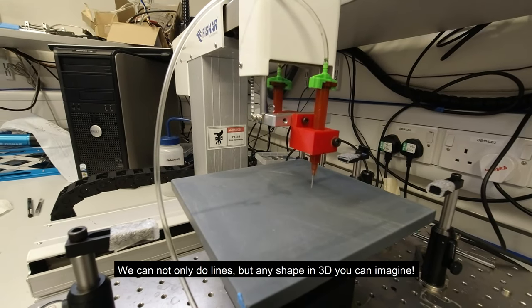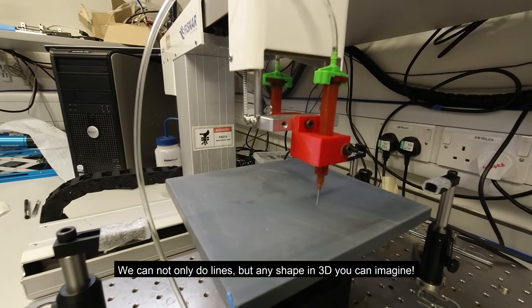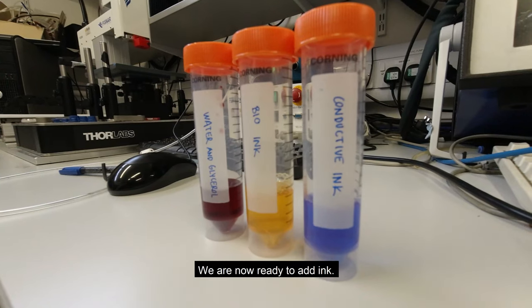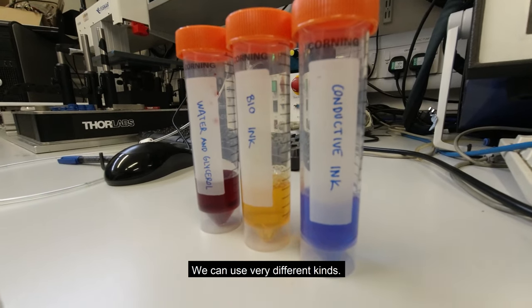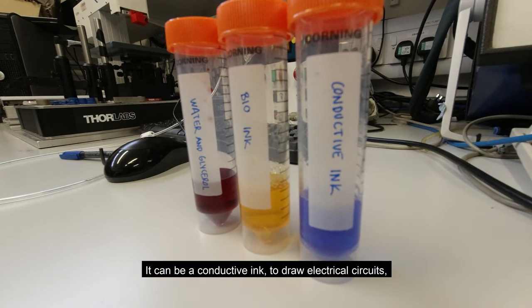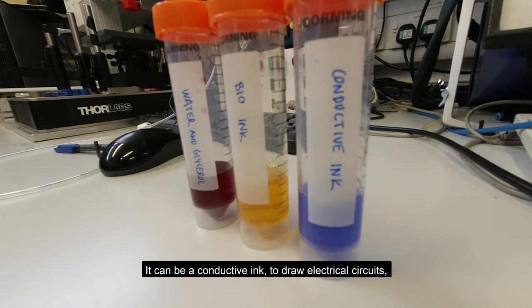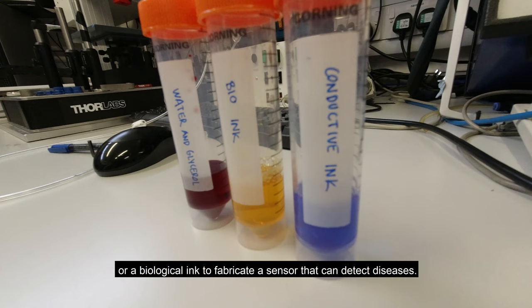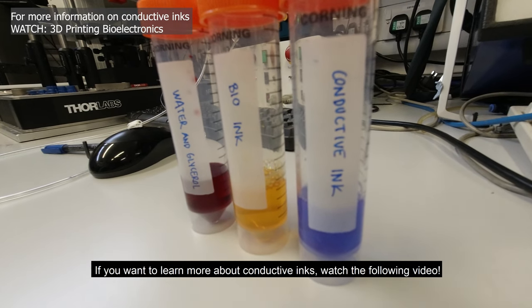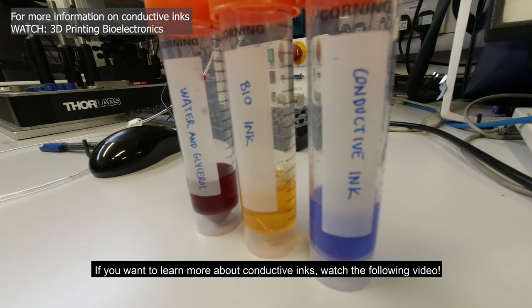We can not only do lines, but any shape in 3D you can imagine. We are now ready to add an ink. We can use very different kinds. It can be a conductive ink to draw electrical circuits, or a biological ink to fabricate sensors that detect diseases. If you want to learn more about conductive inks, watch the following video.